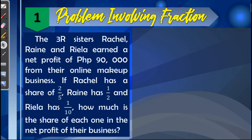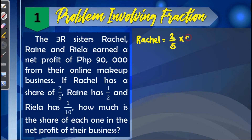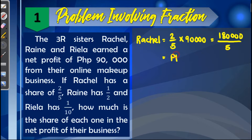As we can see, the three sisters — Racial, Rain, and Riela — have to divide the 90,000 among themselves based on the division of shares stated in the problem. For Racial, she will get two-fifths of 90,000. To do that, we multiply two-fifths by 90,000: the numerator 2 times 90,000 gives 180,000, divided by 5, which equals 36,000.